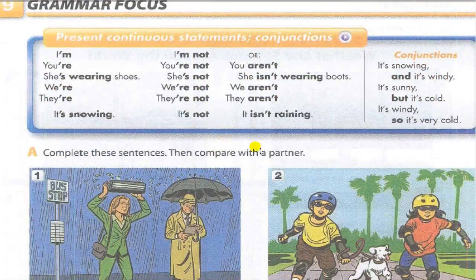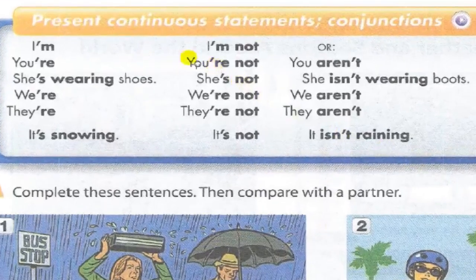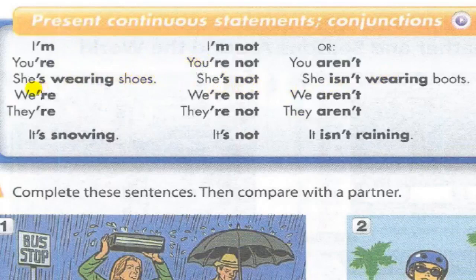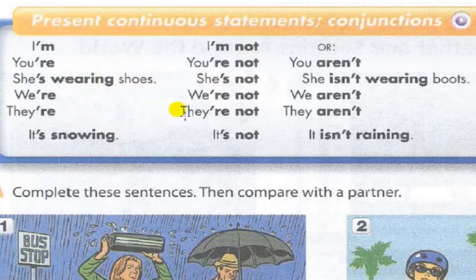Exercise 9: Present continuous. I'm wearing shoes, I'm not wearing boots. You're wearing shoes, you're not wearing boots. She's wearing shoes, she's not wearing boots. We're wearing shoes, we're not wearing boots. They're wearing shoes, they're not wearing boots. It's snowing, it's not raining.